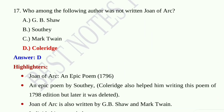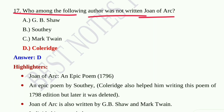Question number sixteen: Who among the following stated 'Poetry is the image of man and nature'? Option A, S.T. Coleridge; option B, William Blake; option C, William Wordsworth; option D, John Keats. Option C, William Wordsworth, is the correct answer. Question number seventeen: Who among the following authors has not written about Joan of Arc? Option A, G.B. Shaw; option B, Southey; option C, Mark Twain; option D, Coleridge. Joan of Arc, an epic poem, was written in 1796 by Southey, with Coleridge also helping, though Coleridge's contribution was later deleted from the 1798 edition.